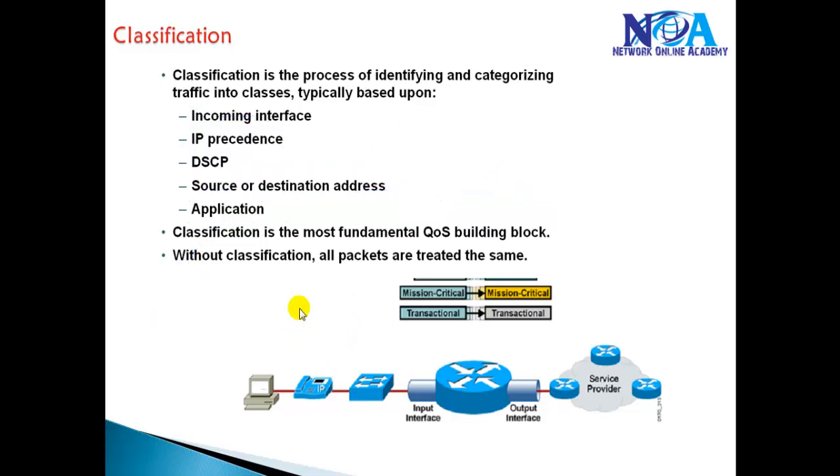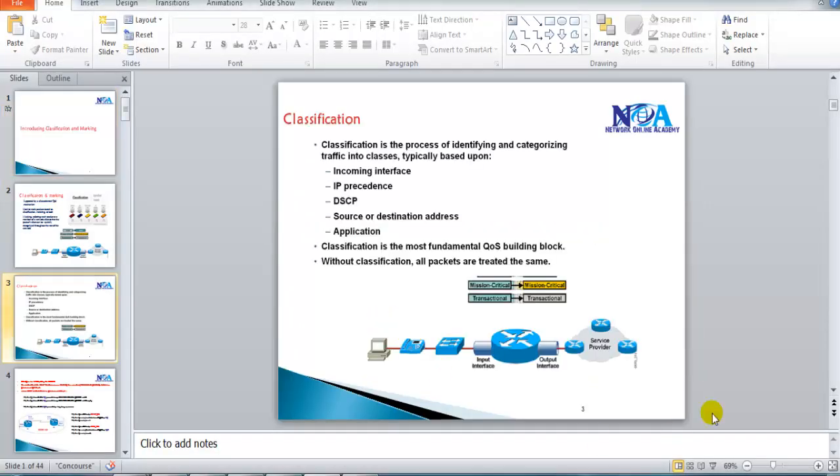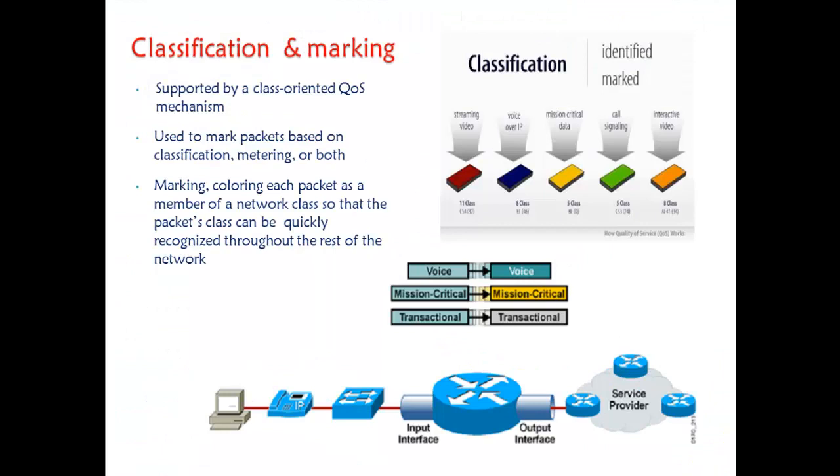So classification is a method where we are going to differentiate the traffic based on our priority levels. Now if there is no classification, then all the traffic will be treated equally, which means it's going to forward based on normal forwarding.